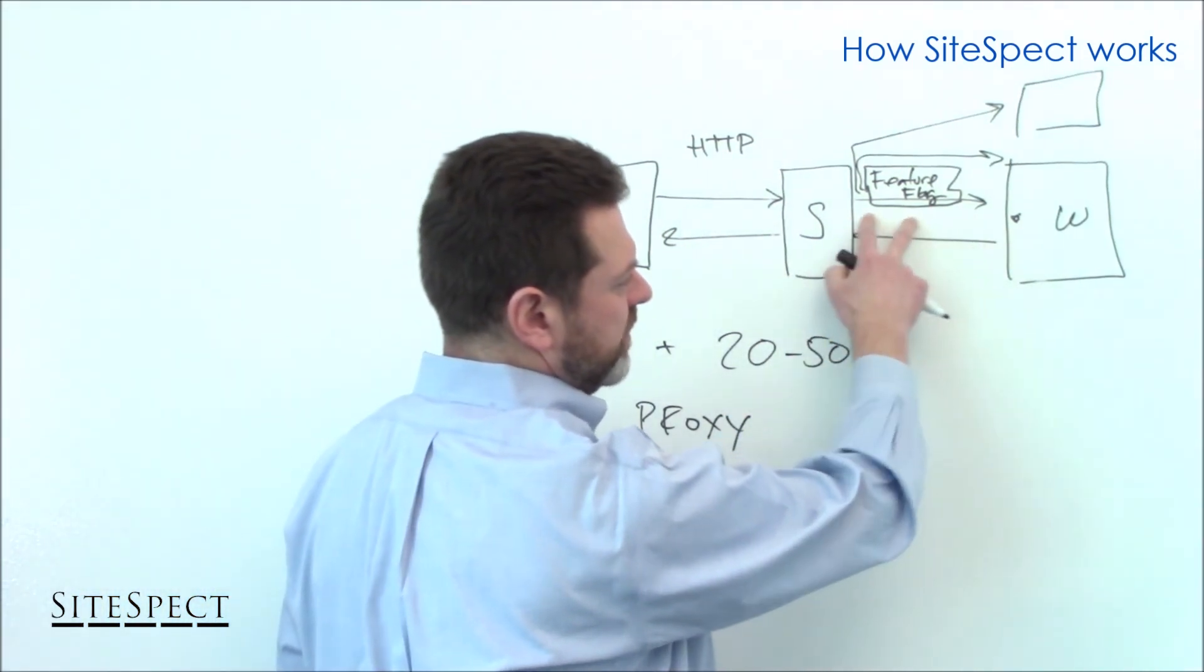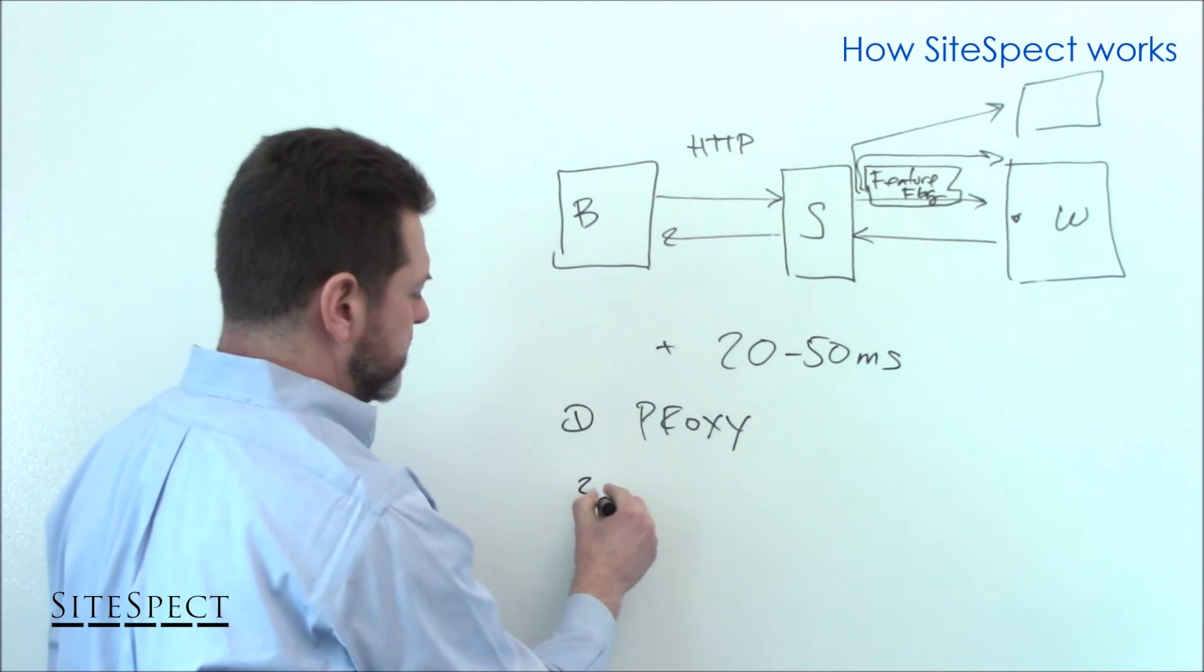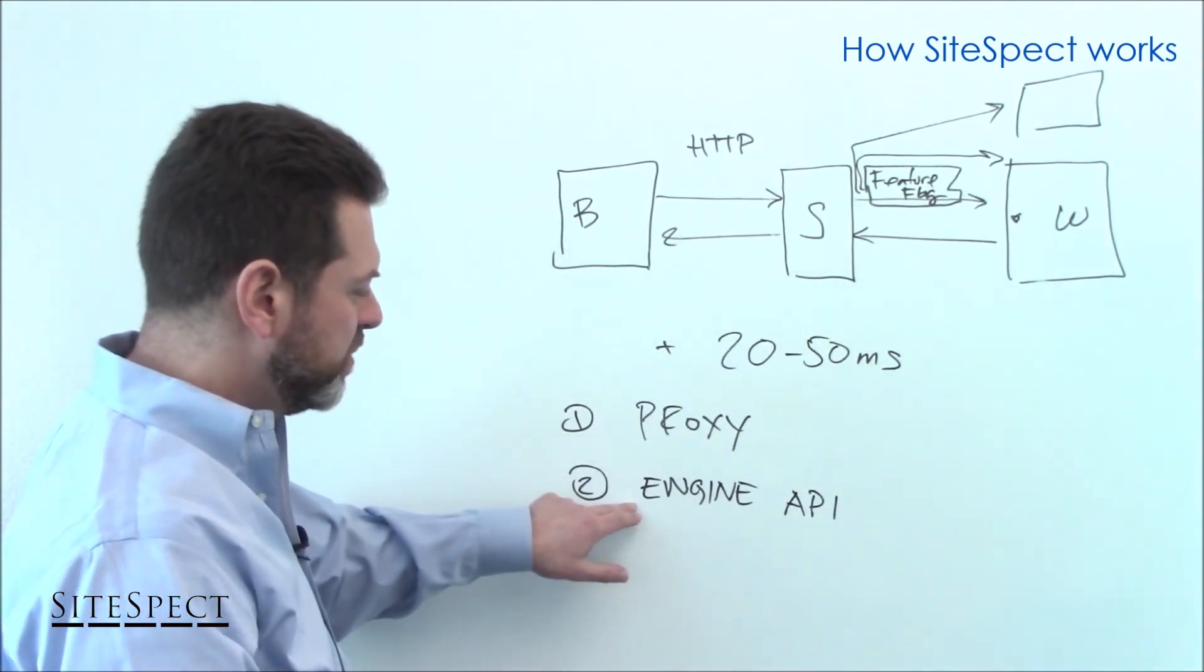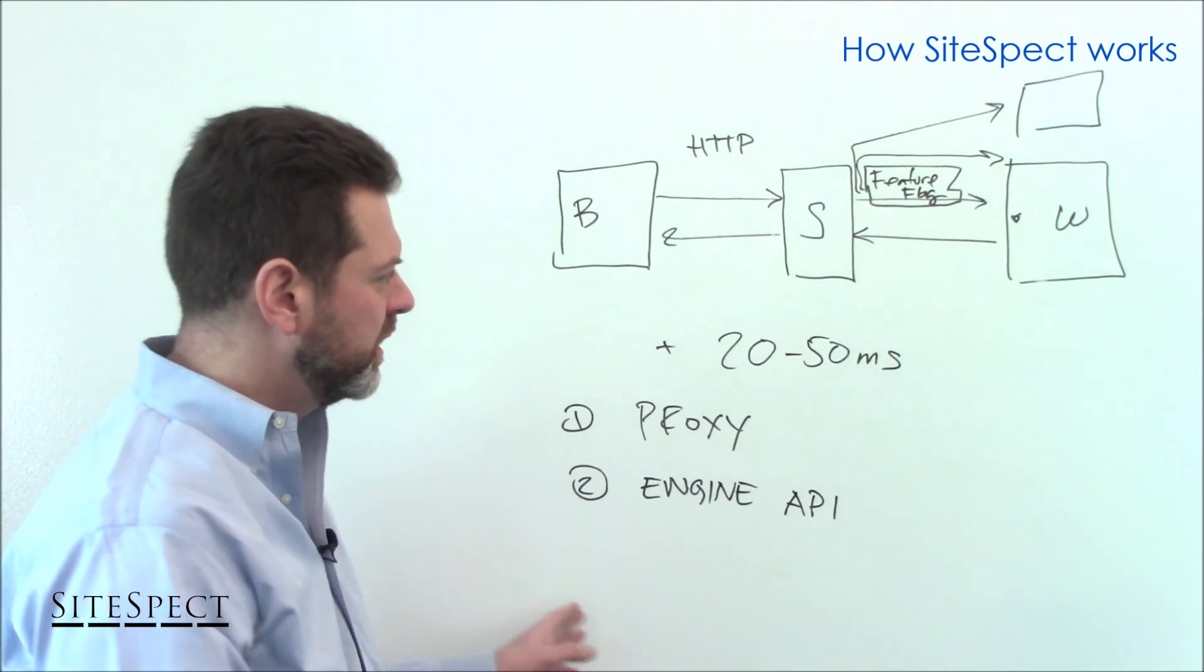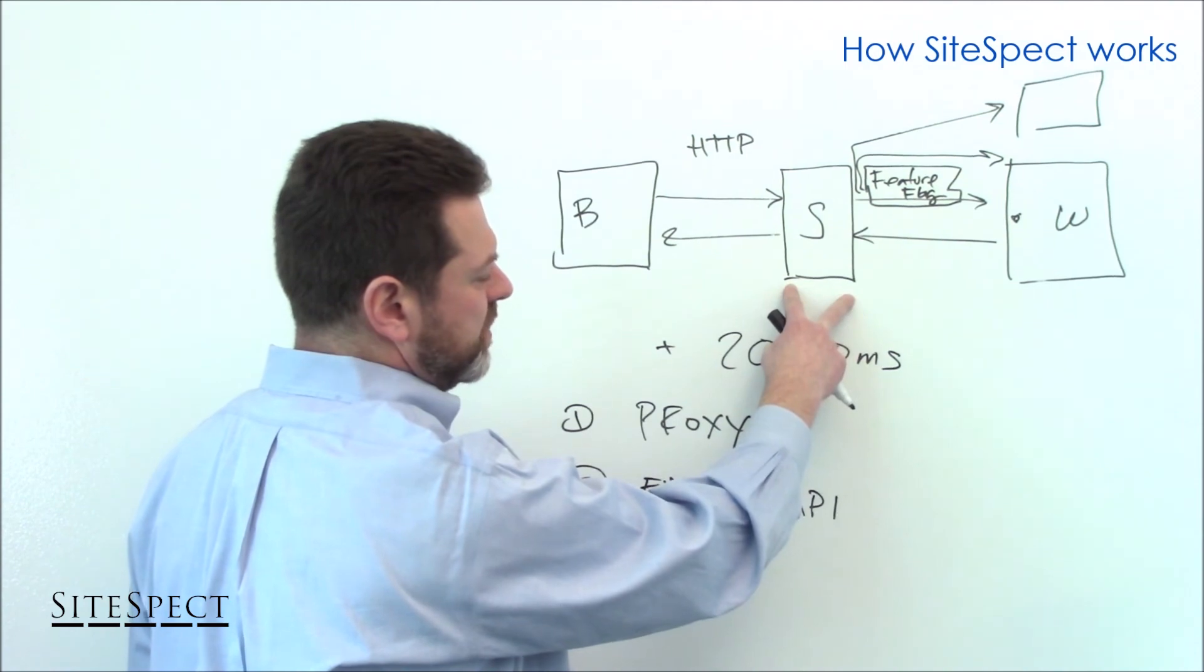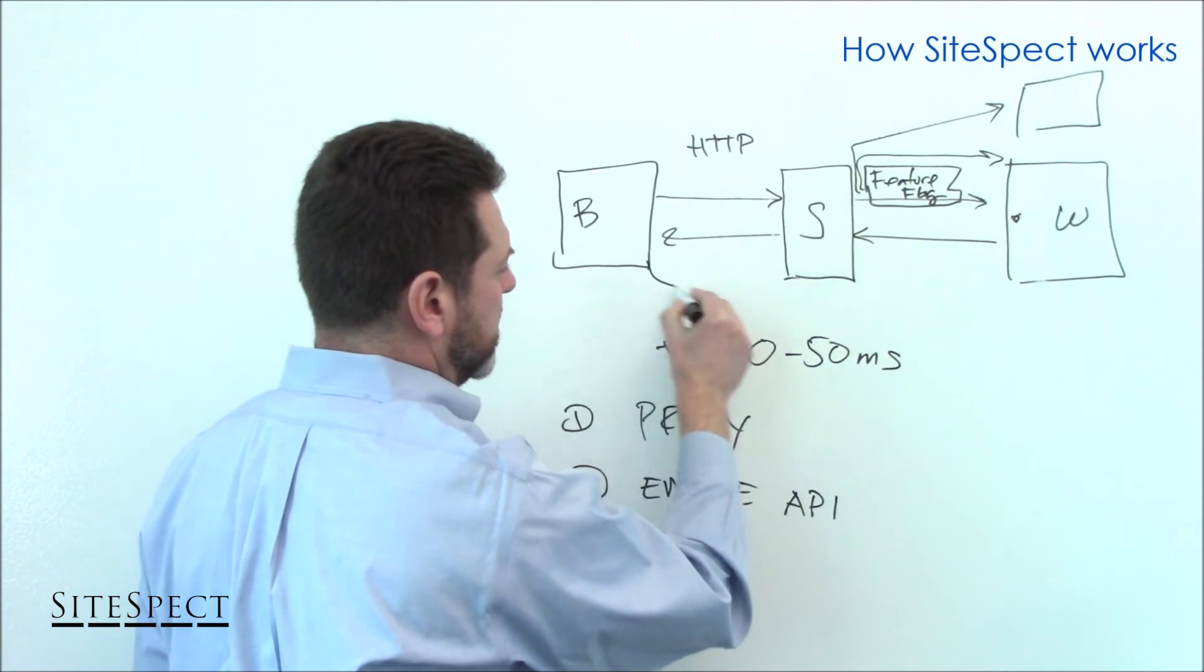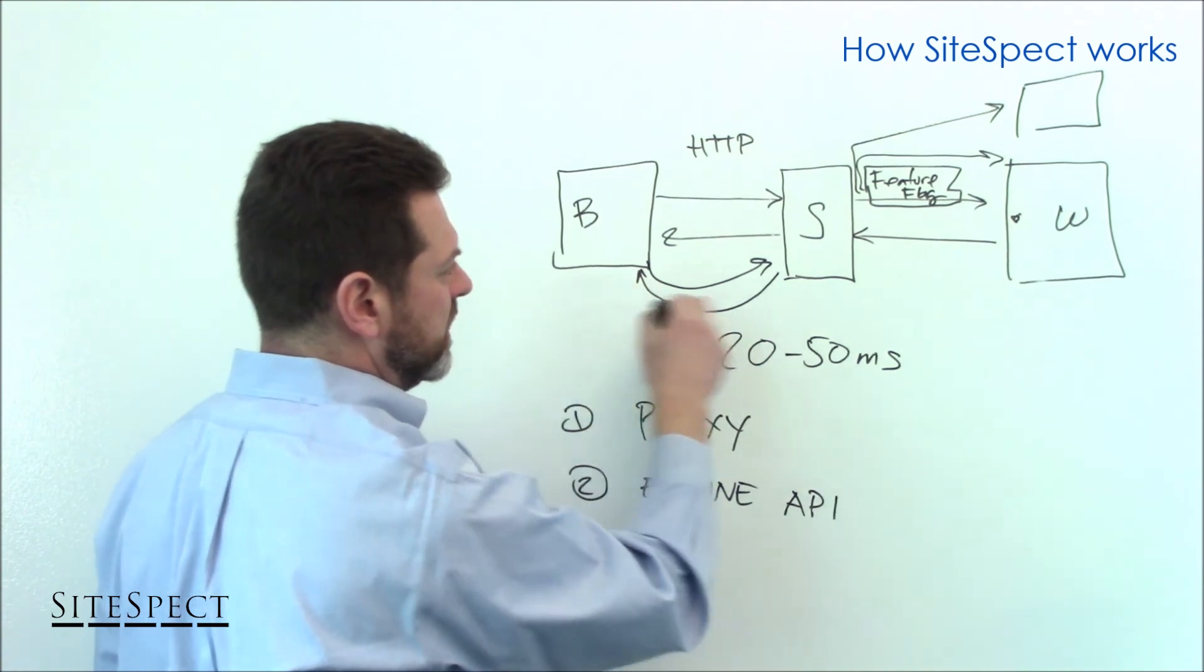There is also a pure API method that we call Engine API. Now the proxy and the engine API, they can work together in conjunction. They can also work completely separate. And what happens there is SiteSpect turns into an endpoint for API calls. So it can work obviously as the proxy, but concurrent with that, your browser can actually make API calls to SiteSpect which are terminated at SiteSpect and responded directly. And the server can do the same thing.